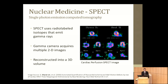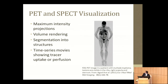Another form of nuclear medicine is SPECT, which is also emissive imaging. In this case, we use radioisotopes that emit gamma rays, and we only need a single camera that rotates around the subject in order to form a 3D picture. These are used for a number of applications, including cardiac perfusion, which is what the example here is showing. In general, PET and SPECT visualization is similar to CT — we often use things such as maximum intensity projections and volume renderings, and we can also make time series images for looking at things such as tracer uptake in the body or examining perfusion in the heart.